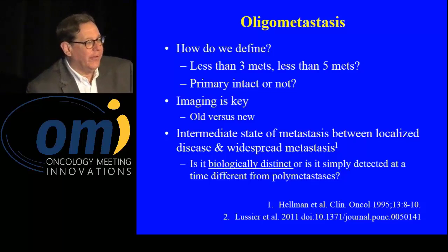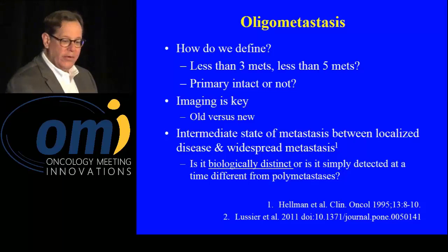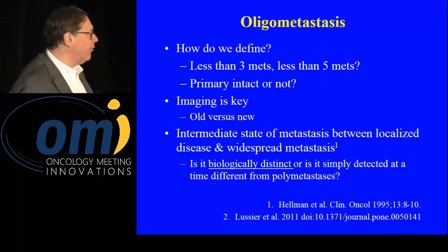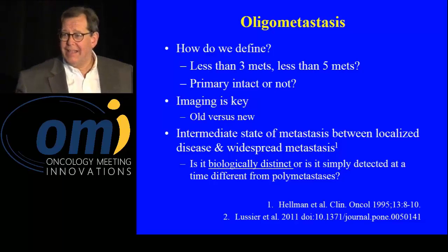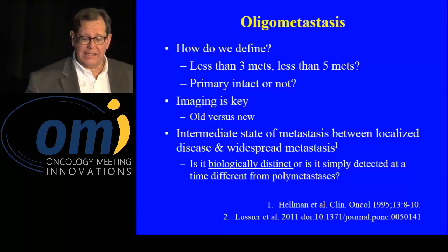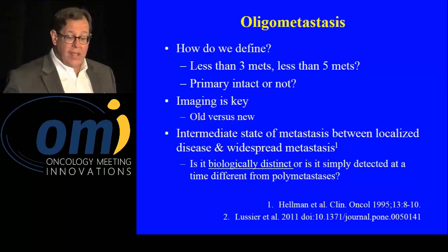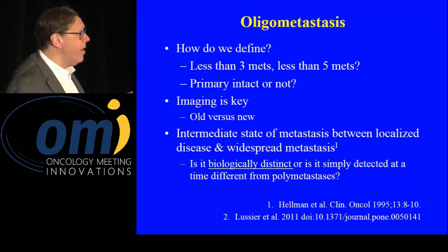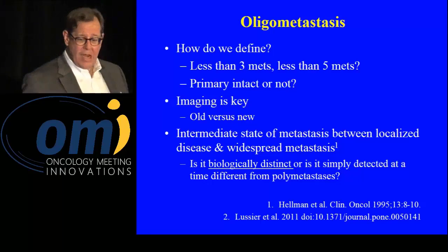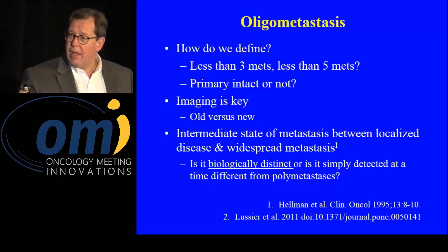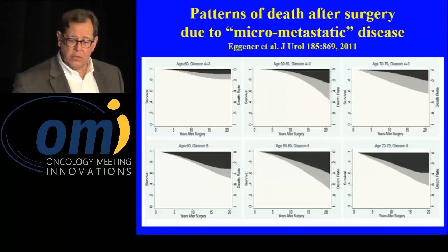Oligometastatic disease — how do we define it? There are lots of different ways: less than three, less than five, with primary intact or without. Imaging is completely key — old versus new. It's a different paradigm when we talk about new imaging versus old imaging in oligometastatic disease. Some have thought of it as an intermediate state between localized and widespread metastasis, with some data suggesting a biologically distinct region — cancers that metastasize slowly — though clearly others differ only in time.